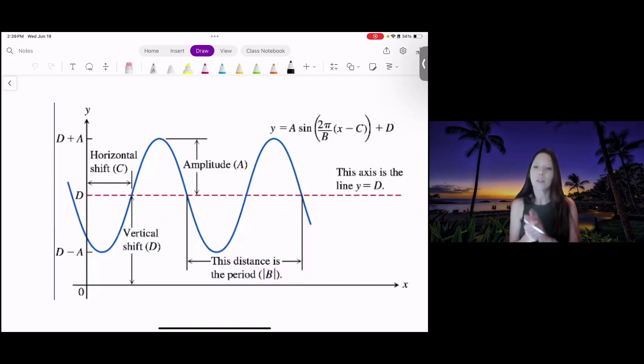And then your horizontal and vertical shift is where your parent function starts. So remember, sine starts at the origin and cosine starts at 0, 1. So when you're shifting, you're going from that point.